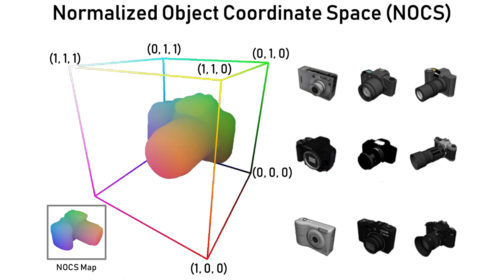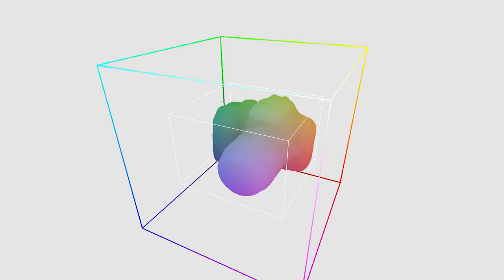We introduce Normalized Object Coordinate Space, or NOCS, which is defined as the 3D space elements contained within a unit cube. We normalize objects and orient instances from each category consistently within the NOCS. NOCS allows different but related objects to have a common reference frame, enabling 6DoF pose and size estimation of unseen objects.